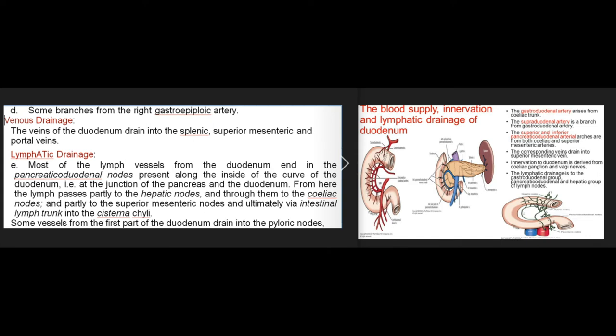The veins of the duodenum drain into the splenic, superior mesenteric, and portal veins. Most of the lymph vessels from the duodenum end in the pancreaticoduodenal nodes present along the inside of the curve of the duodenum. From here lymph passes partly to the hepatic nodes and through them to the coeliac nodes, and partly to the superior mesenteric nodes and ultimately via the intestinal lymph trunk into the cisterna chyli.